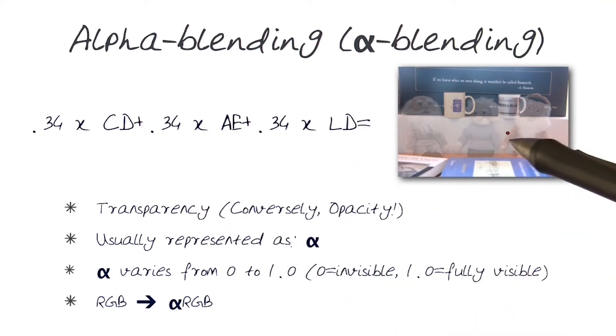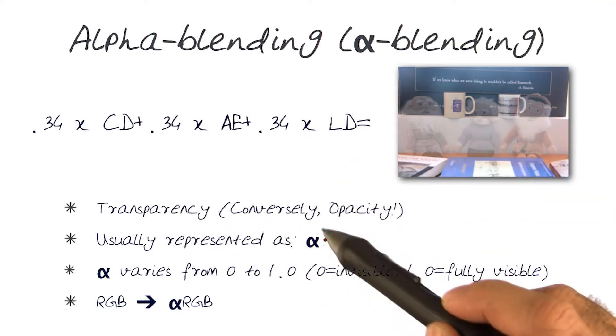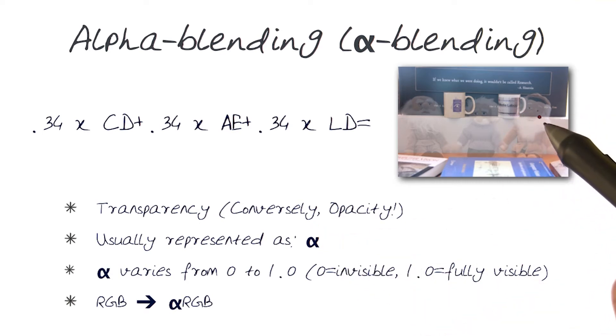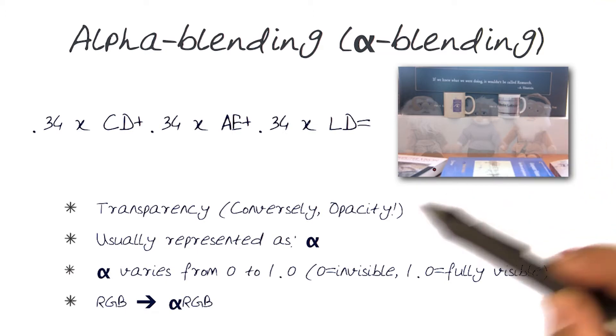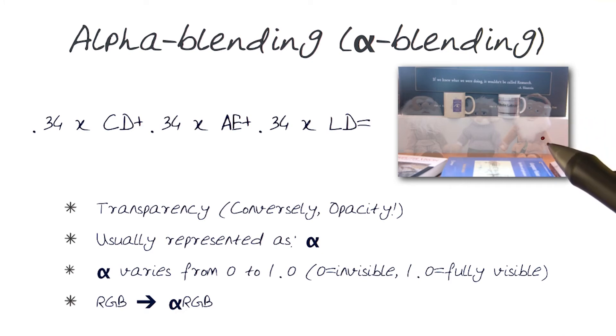In essence, transparency is what alpha is referred to as. What that means is I've converted and made each one of them transparent about 34% from the original image.